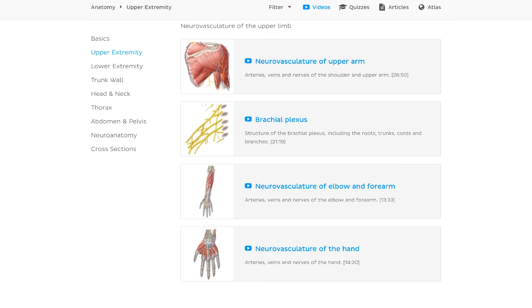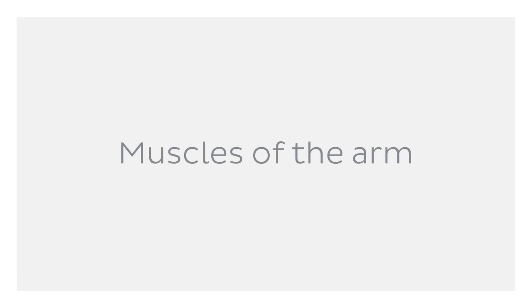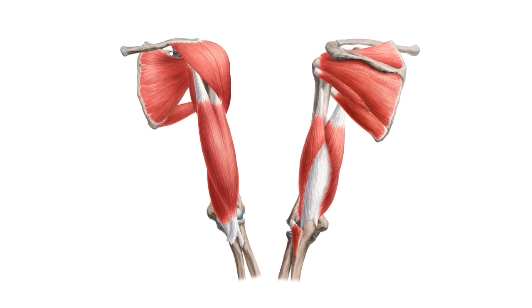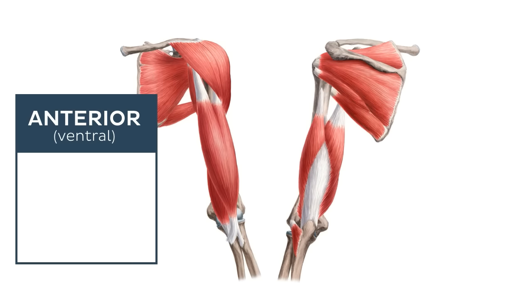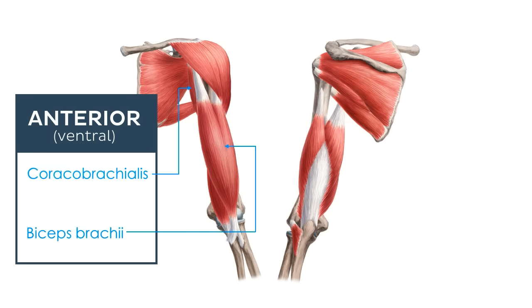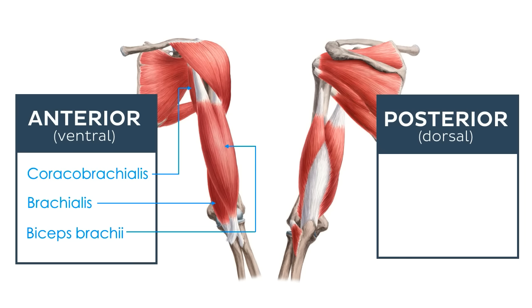We're going to begin this tutorial by first exploring the muscles of the arm region. These muscles can be split into two groups. The first belongs to the anterior or ventral compartment of the arm and includes the biceps brachii, coracobrachialis, and brachialis muscles. The second group belongs to the posterior or dorsal compartment, which includes the anconeus and the triceps brachii muscle.